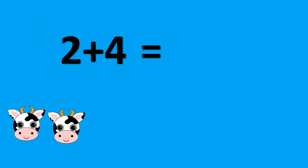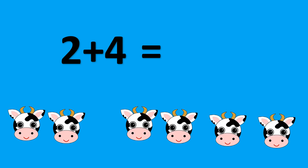2 plus 4. There are 2 cows. Let's add 4. Now we have 2 cows plus 4 more. This equals 6 cows. So, 2 plus 4 equals 6.